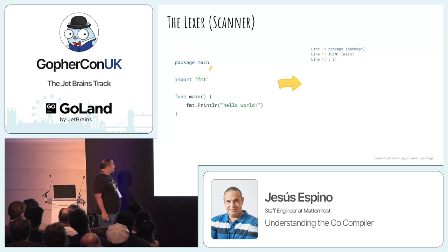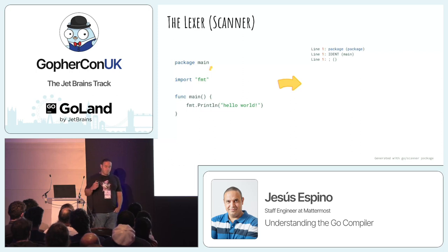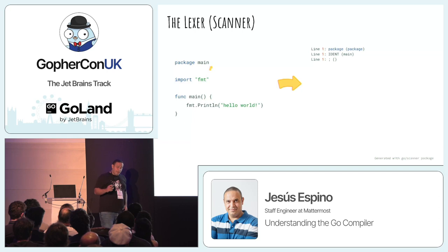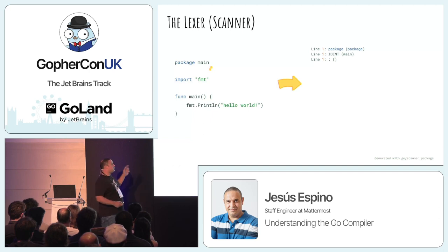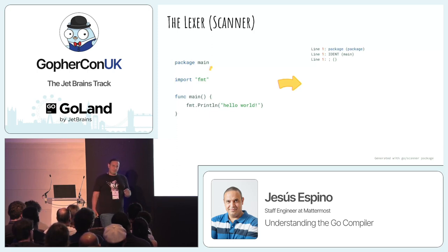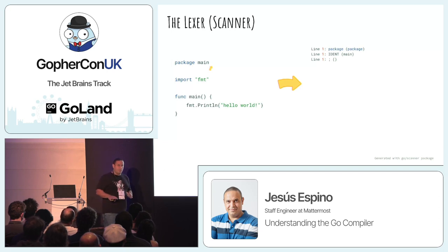It reads 'main' and a newline and says: main looks like an identifier. Do I have a keyword called main? The answer is no, so main is an identifier token with value 'main'. Something super cool is that Go has optional semicolons at the end of statements, but from the lexer's perspective they're optional because the lexer adds them automatically. Based on the token being handled and certain rules about newlines, it decides to insert a semicolon automatically. From the perspective of the rest of the compiler, semicolons are mandatory.